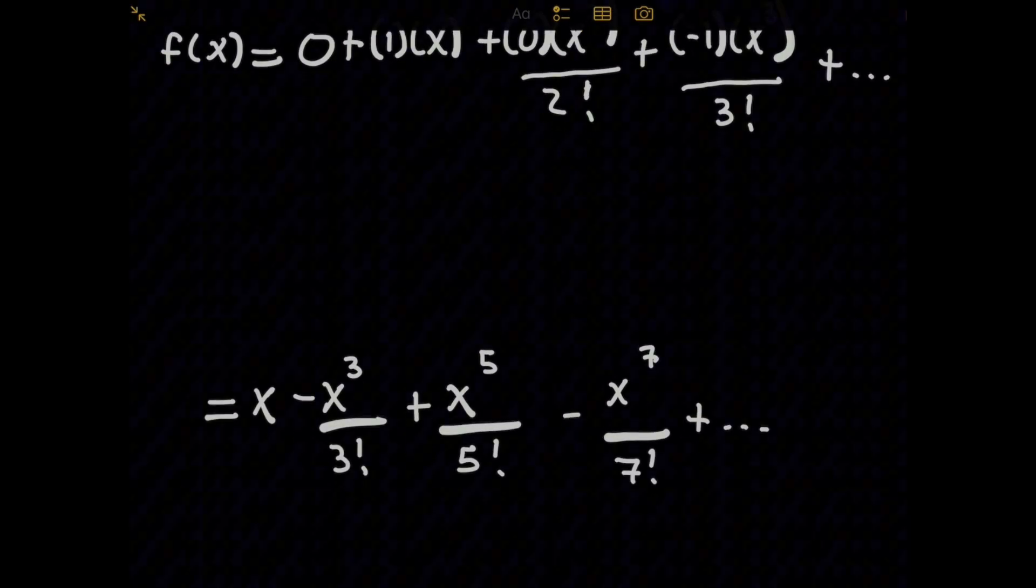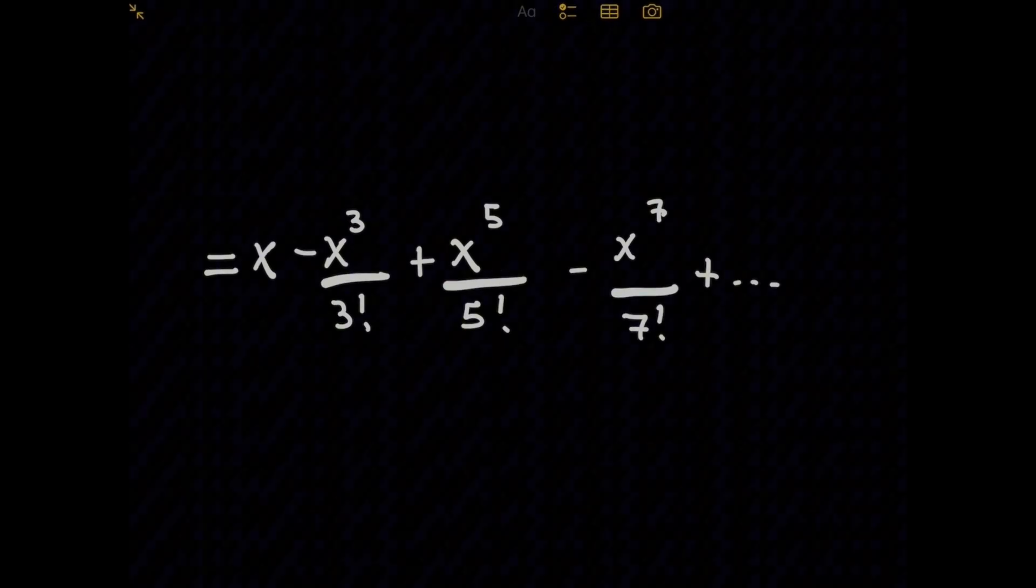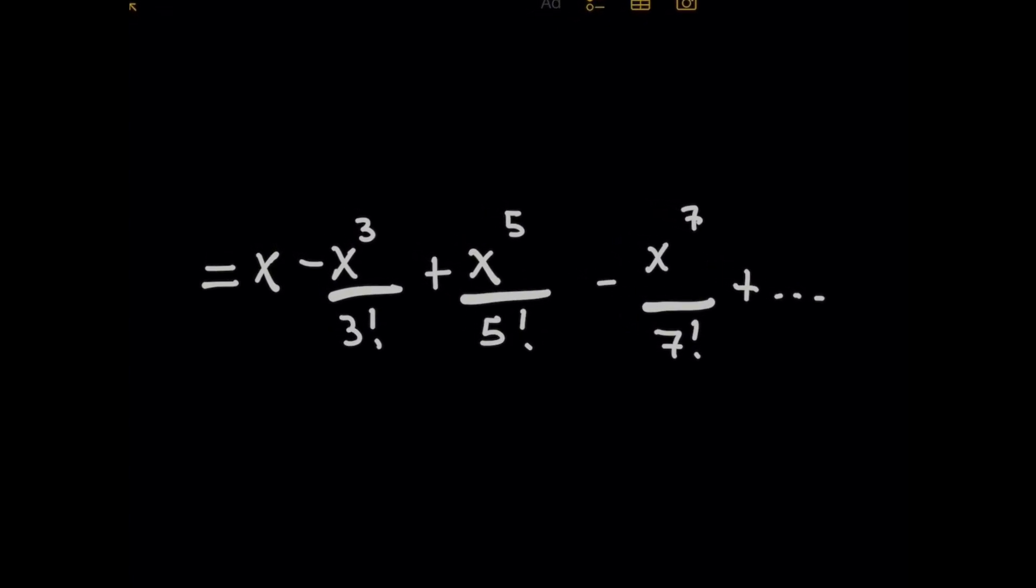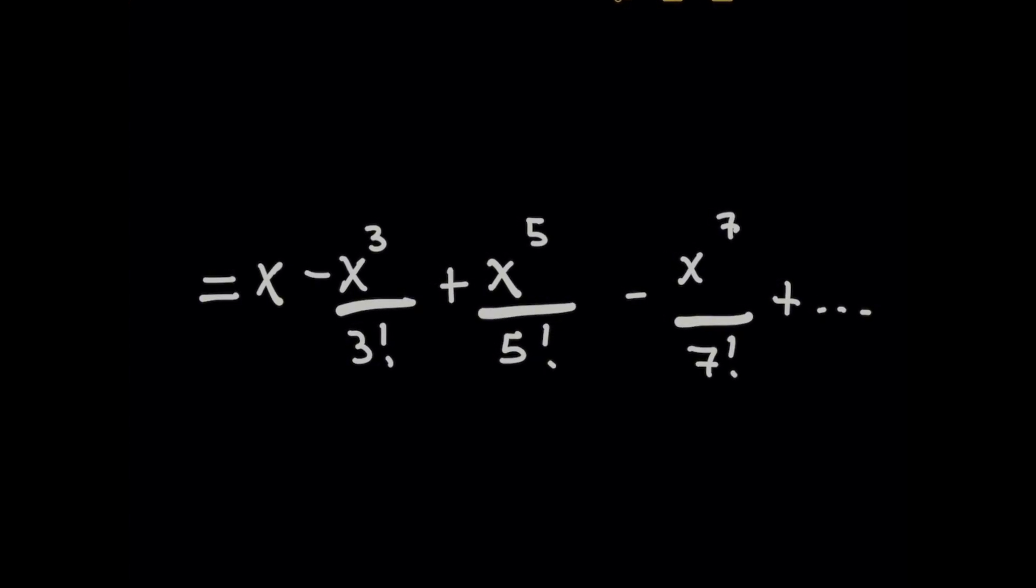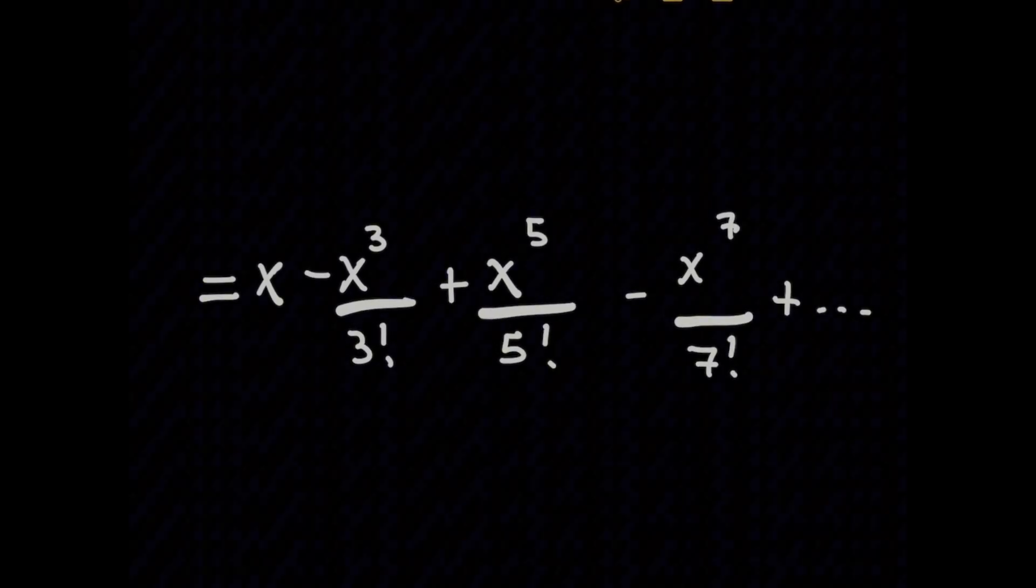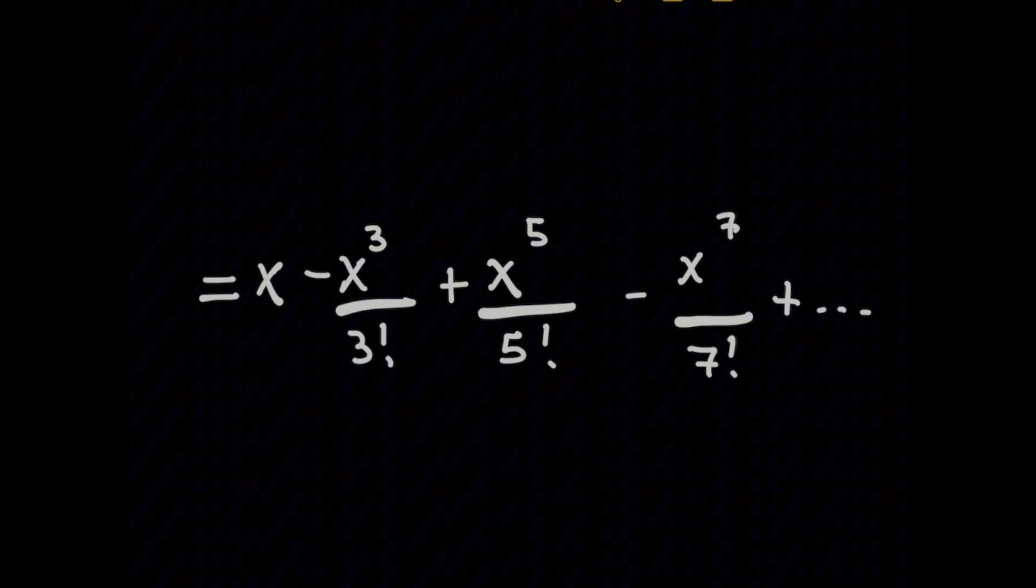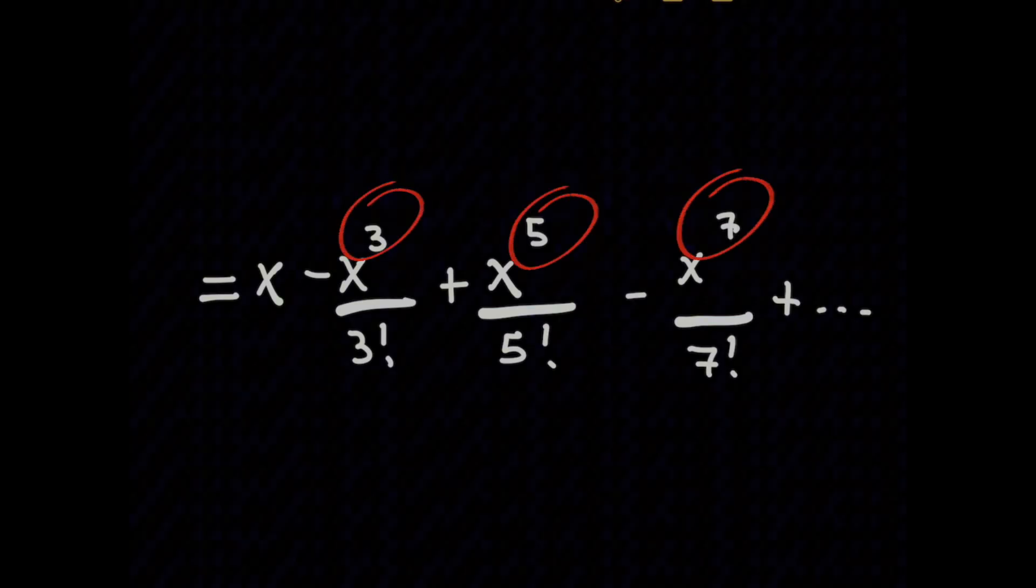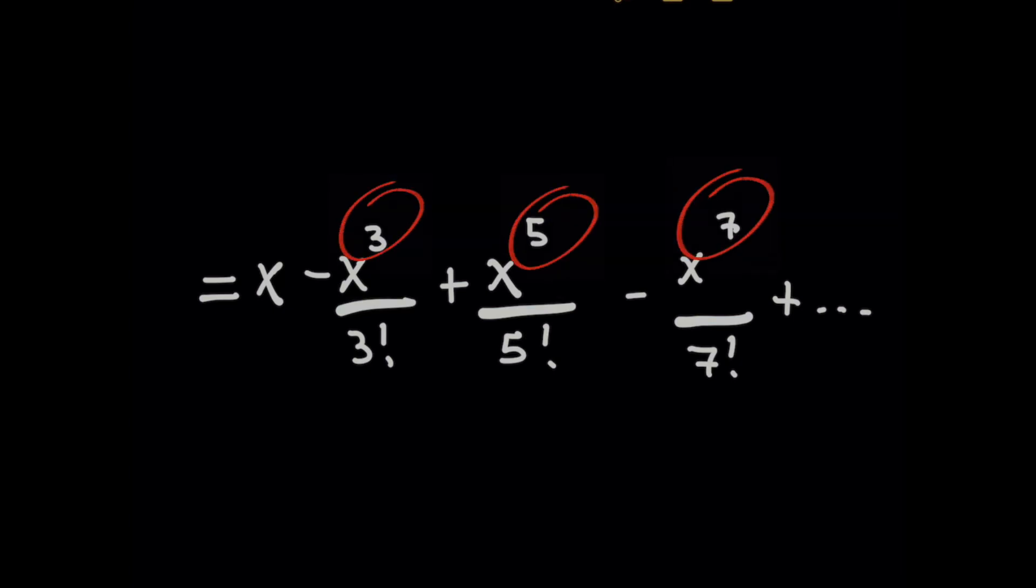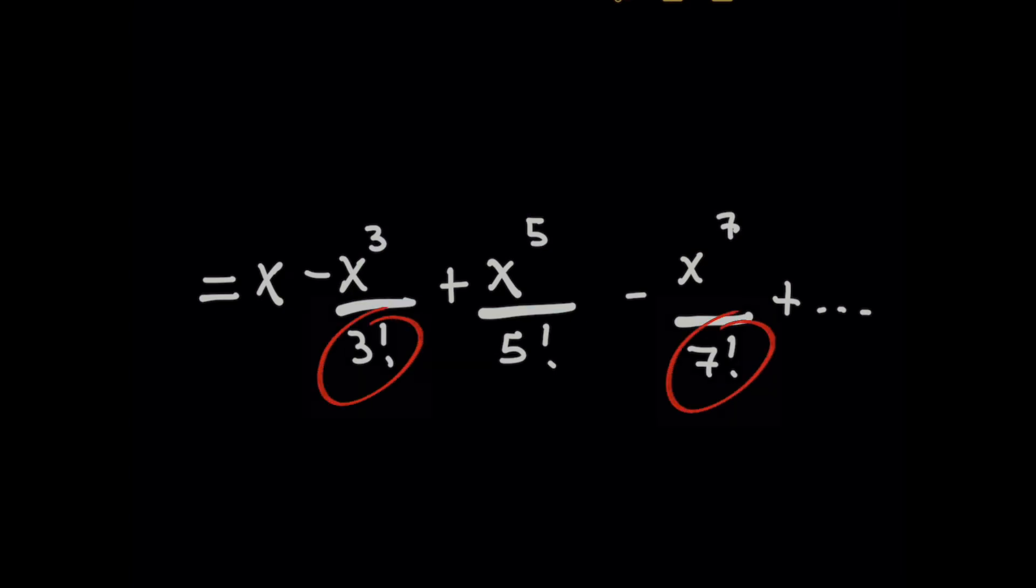I'll go ahead and do it to the seventh power of x term. So simplifying everything, you'll get x minus x cubed over three factorial plus x to the fifth over five factorial minus x to the seventh over seven factorial and so on. So we already see a pattern here, right? The only non-zero terms had values where x was raised to an odd power and the odd power matches the same number as the factorial you're dividing by.